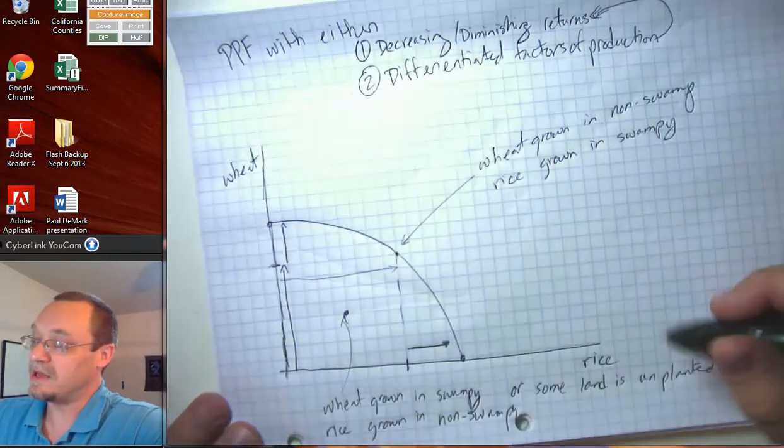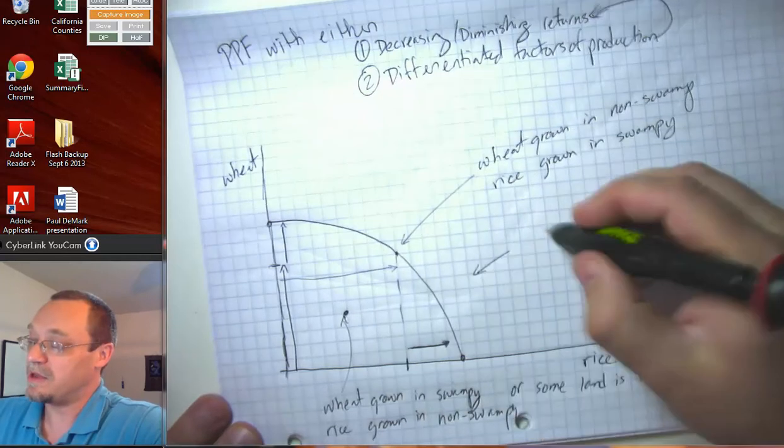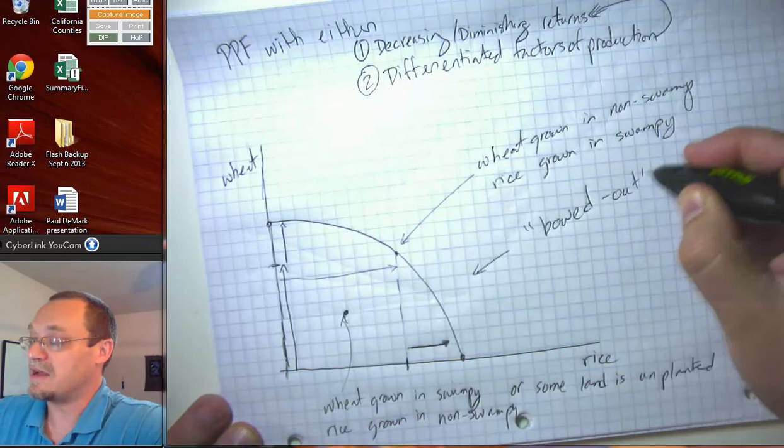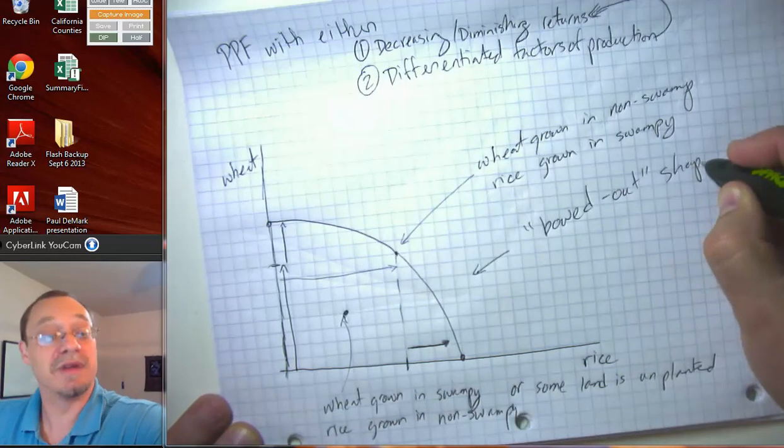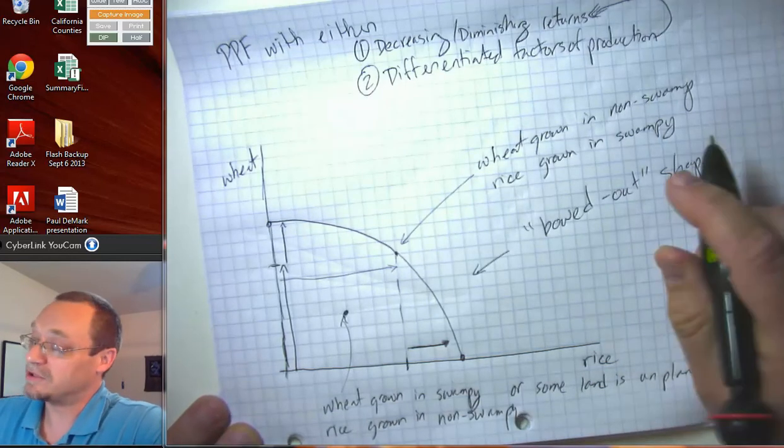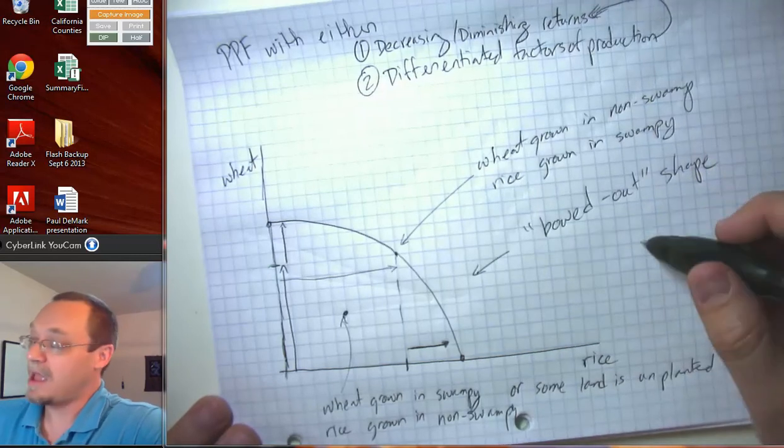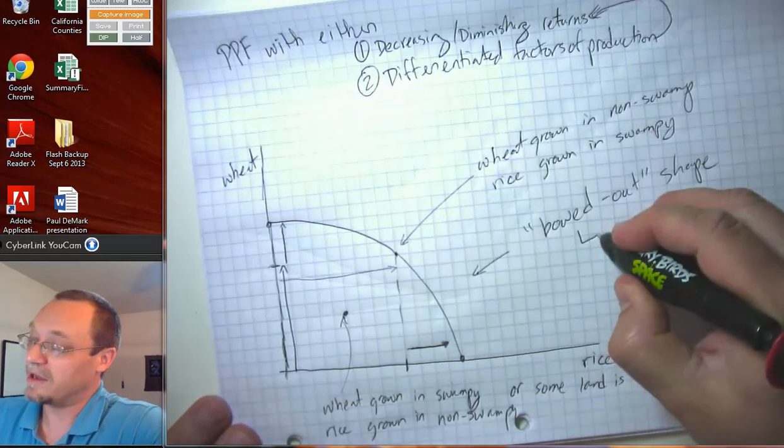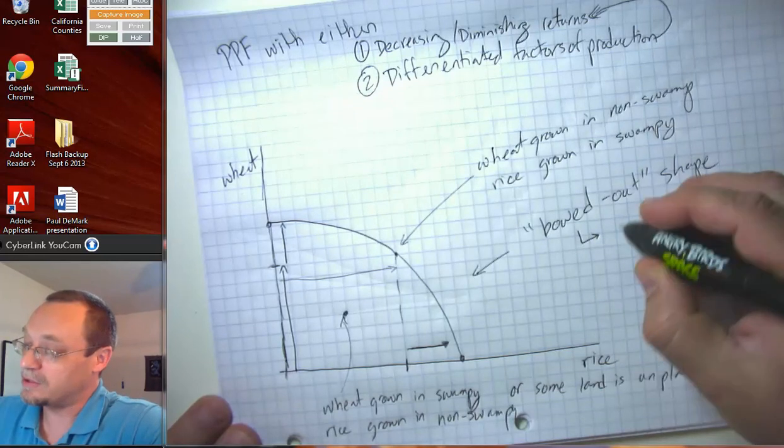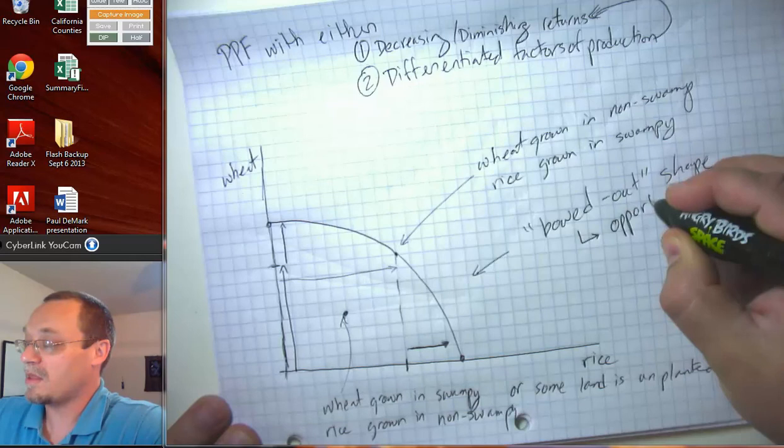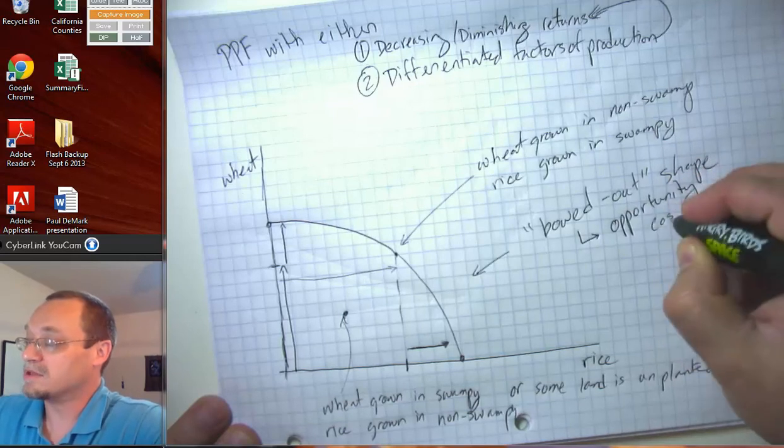So it might be our PPF looks something like this. So in this case, notice this PPF has a what we call bowed out shape. It's not a straight line. And that bowed out shape again is due to one of those things up there. And this implies that the opportunity cost of production is not constant.